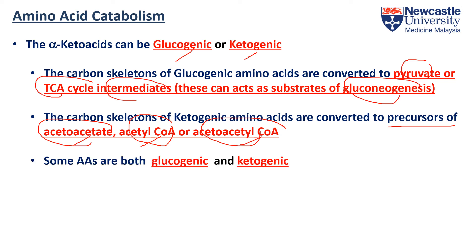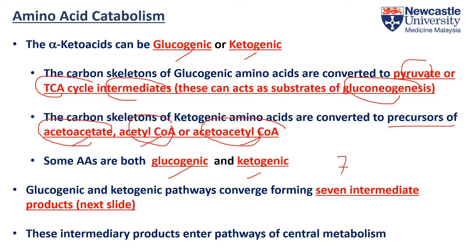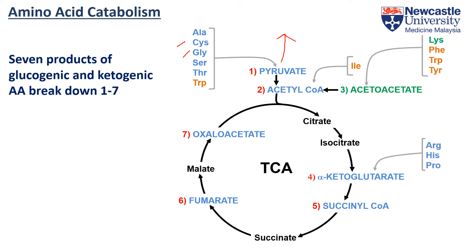Some amino acids could be both glucogenic and ketogenic. If you look at their metabolic pathways, both types of amino acids converge, forming 7 intermediate products that can enter the central metabolism — the TCA cycle. From alanine, cysteine, glycine, and others, you can get pyruvate, which can be used in gluconeogenesis. From isoleucine, you can get acetyl-coenzyme A. From certain amino acids you can get acetoacetate, a ketone body. From arginine, histidine, and proline, you get alpha-ketoglutarate, which can be used in transamination. Other amino acids yield succinyl-coenzyme A. From phenylalanine and tyrosine, you get fumarate. From asparagine and aspartic acid, you get oxaloacetate.